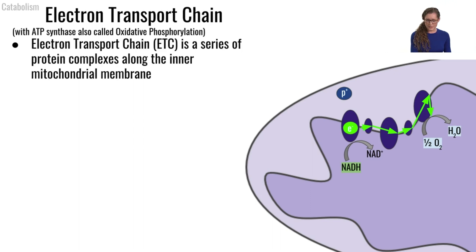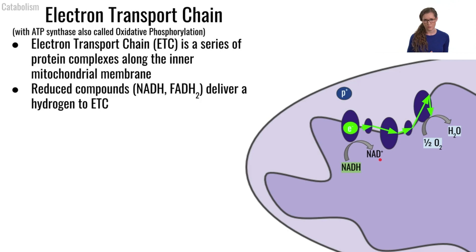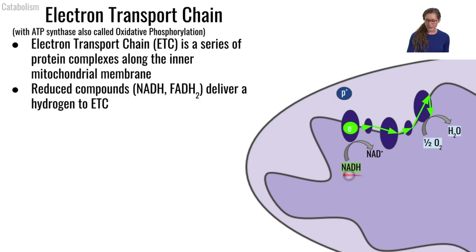The electron transport chain, abbreviated as ETC, is a series of protein complexes that live on the inner mitochondrial membrane. Our reduced compound, for example NADH, is going to arrive at the electron transport chain and it is going to get oxidized. It is going to donate its electrons and hydrogen to the electron transport chain, which is then going to rip that hydrogen apart. Remember that a hydrogen is composed of a proton and an electron.